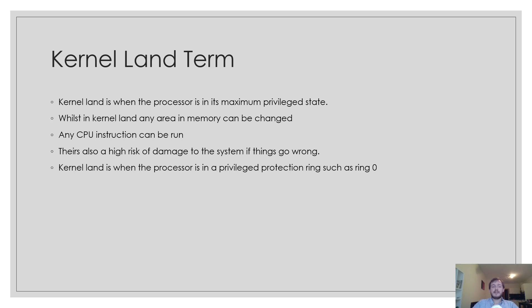Kernelland is when the processor is in its maximum privileged state, ring 0. Whilst in kernelland, any area in memory can be changed and any CPU instruction can be executed. There's also a high risk of damage to the system if things go wrong. Kernelland refers to privileged protection rings such as ring 0, ring 1, or ring 2, though when we talk about kernelland we are generally referring to ring 0.